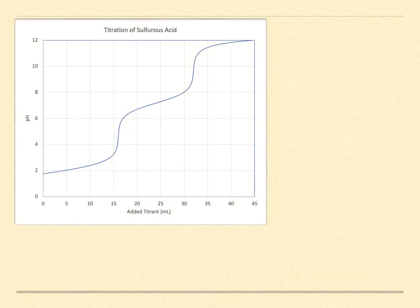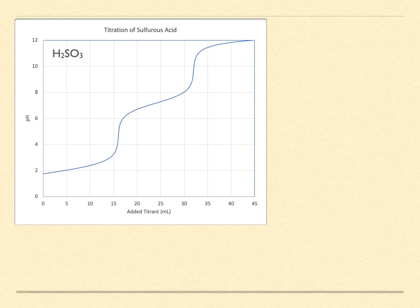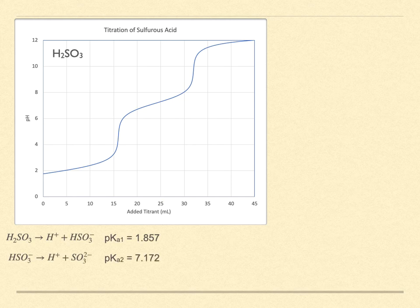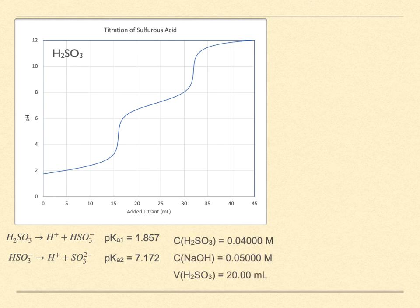Here's the titration curve for a 0.04 molar solution of sulfurous acid H2SO3. Note that this is not sulfuric acid, which is H2SO4. Both protons on sulfurous acid are weak and partially dissociate. By contrast, the first proton on sulfuric acid is strong and fully dissociates. There are two equilibria with their associated acid dissociation constants. The aliquot titrated is 20 milliliters, and the titrant, a strong base such as sodium hydroxide, has a concentration of 0.05 molar. The first obvious feature is that there are two equivalence points, one around an added titrant volume of about 16 milliliters and another at 32 milliliters.